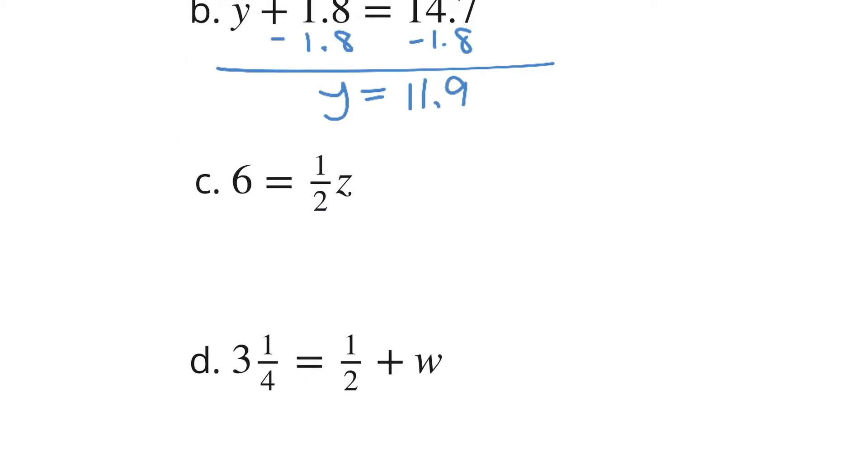In C, 6 equals half times Z. Half of what is 6? You can ask yourself that and just get 12. Or you can multiply by 2 here on both sides and get 12 equals Z because half times 2 is 1Z.